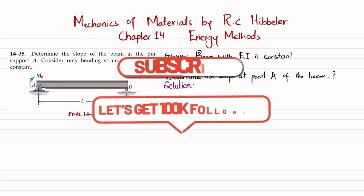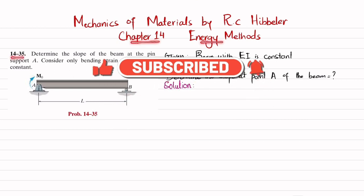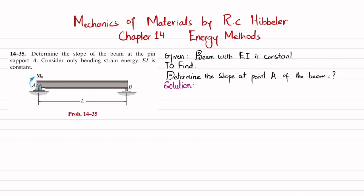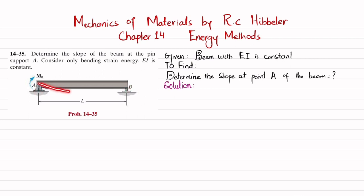Welcome back. In this video we are going to solve problem 14-35, taken from chapter 14 on energy methods in the book Mechanics of Materials by R.C. Hibbeler. The statement is: determine the slope of the beam at pin support A, considering only bending strain energy, where EI is constant. The beam has a moment M₀ applied at pin support A and a roller support at B, and we need to find the slope at point A.